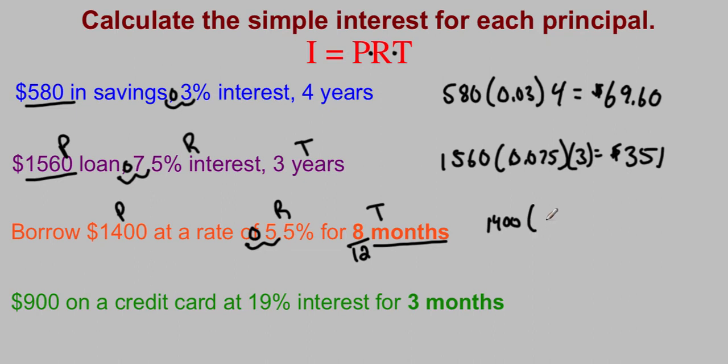So 1,400 times 0.055 times 8 twelfths. If you're not comfortable turning this into a decimal or putting it in as a fraction in your calculator, what it really means is you're going to multiply by 8 and then divide by 12 when you put it into your calculator. So 1,400, that's the amount we borrowed, times 0.055 times 8 divided by 12. That gives us a total of 51.333, which we'd round off to be $51.33. So it would cost you a little bit more than $50 in interest over 8 months for borrowing that $1,400.